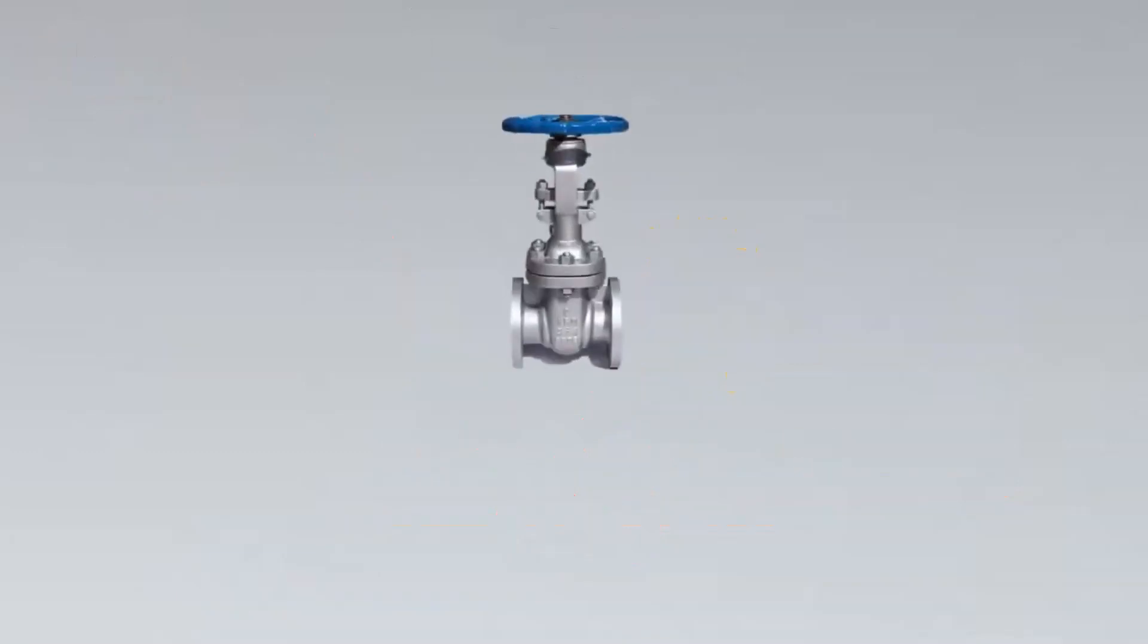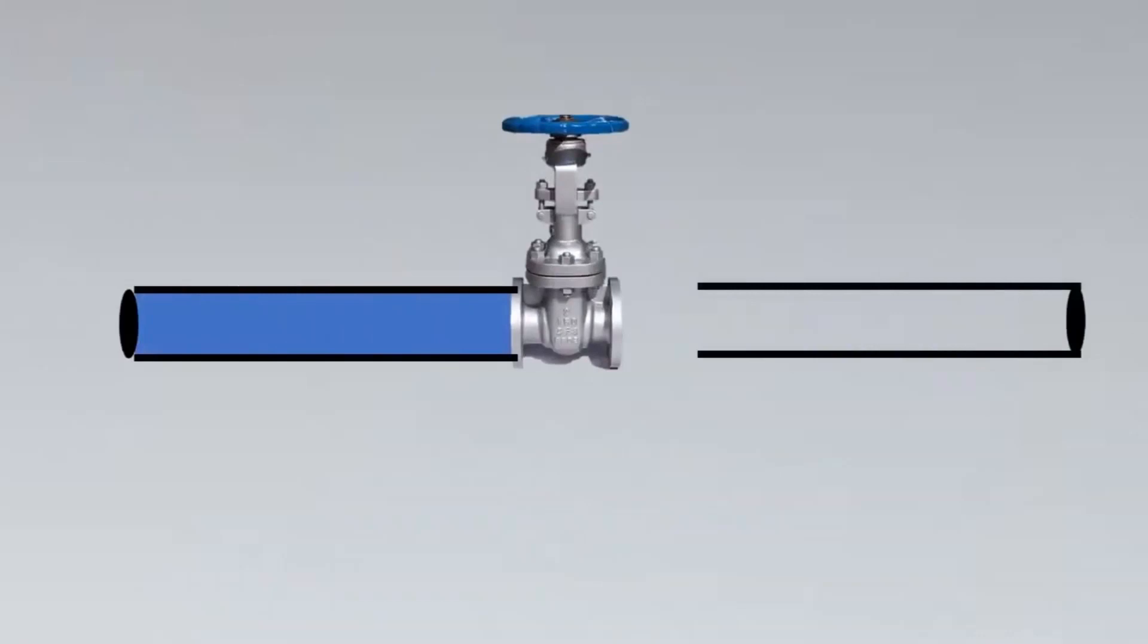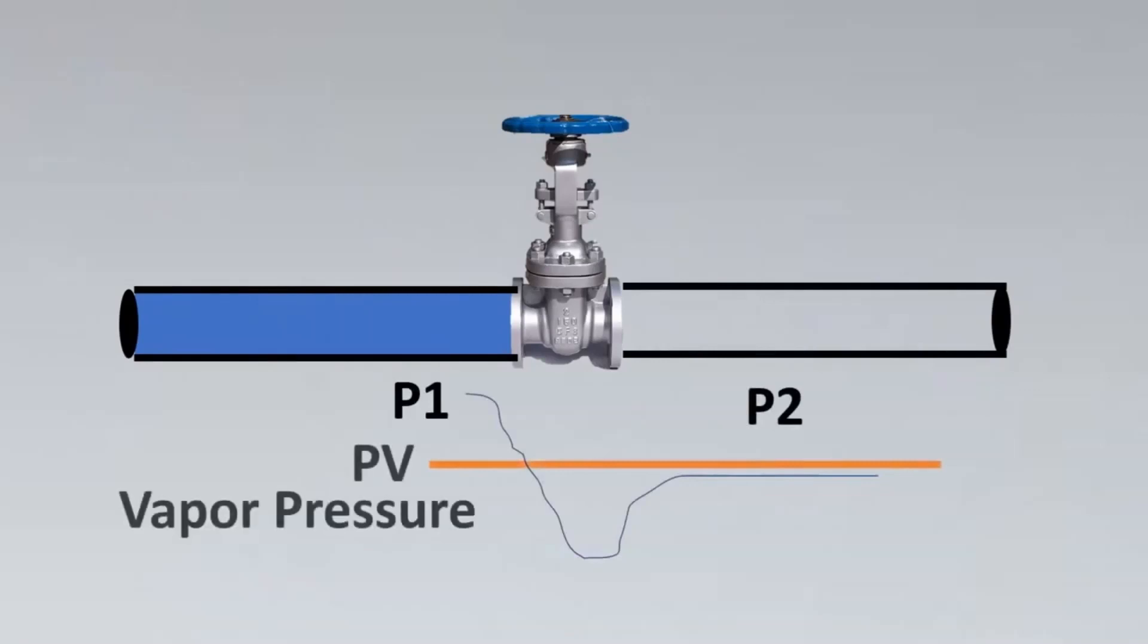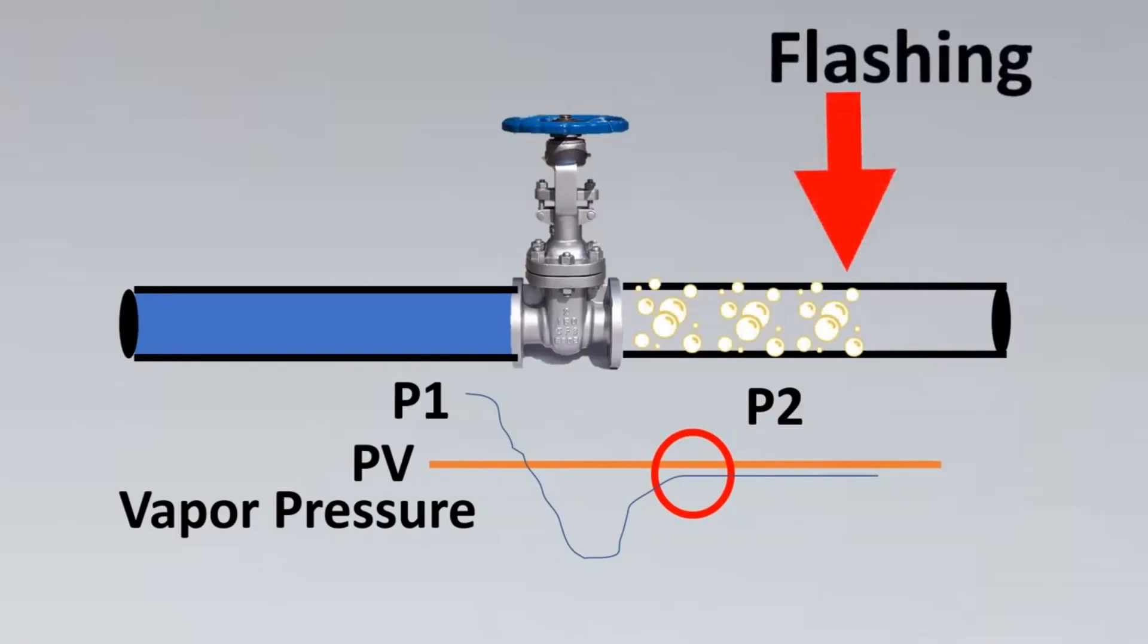Now we look into the next case, which is when there is flow to the valve but the pressure downstream does not recover. This happens when the pressure downstream is still below the vapor pressure curve. This phenomenon makes the liquid still stay in the vapor pressure phase in the downstream, and this phenomenon is called flashing.